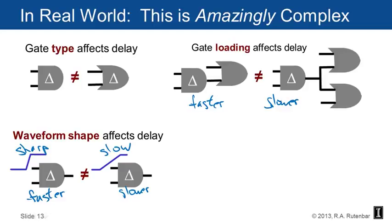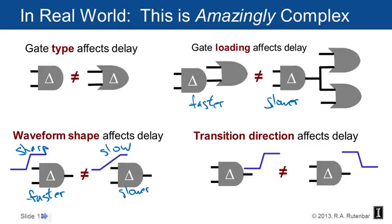The transition direction affects the delay. If the output of an AND gate is rising versus falling, the amount of time to go from 0 to 1 might be different than from 1 to 0. Why? Because we make logic gates out of complementary MOS (CMOS), and P-type transistors aren't the same as N-type transistors in fundamental speed. There's asymmetry, and it gets even worse depending on the gate type — the way complex gates like XOR behave is even more complicated.